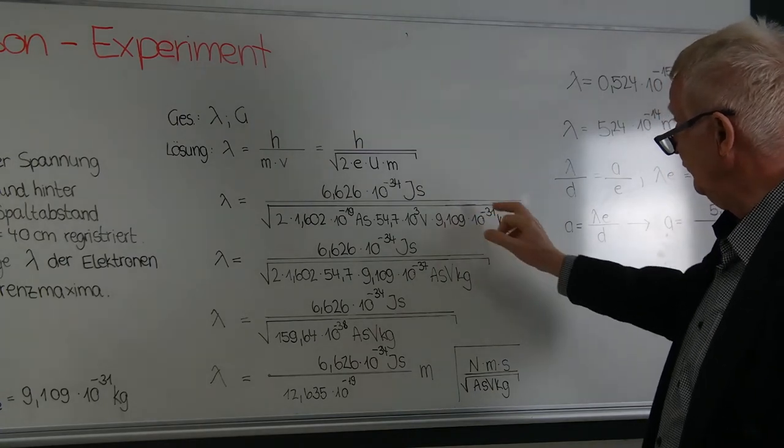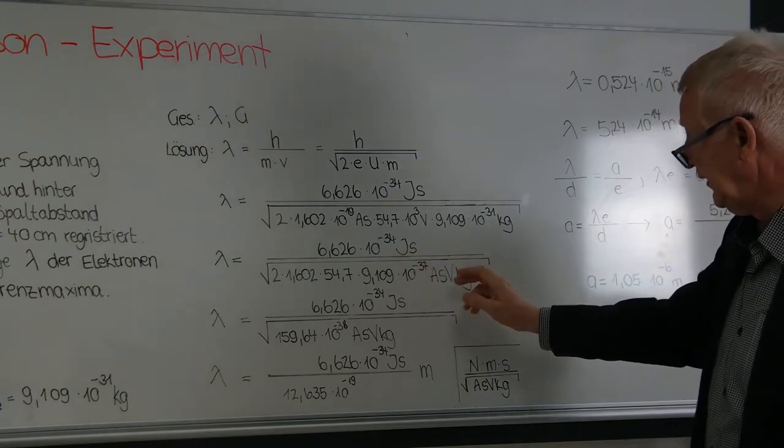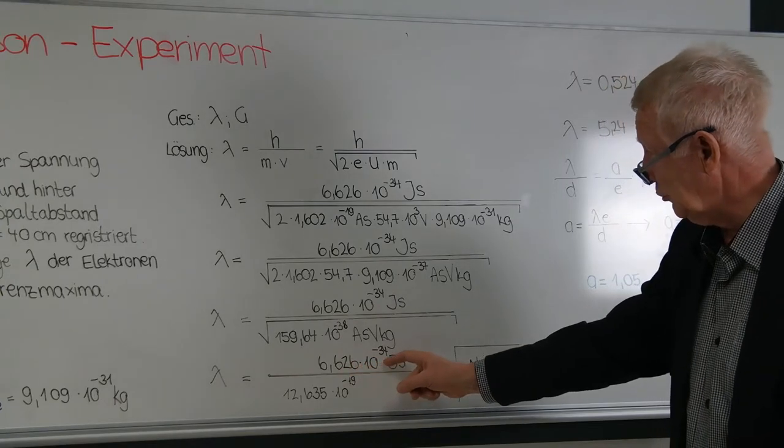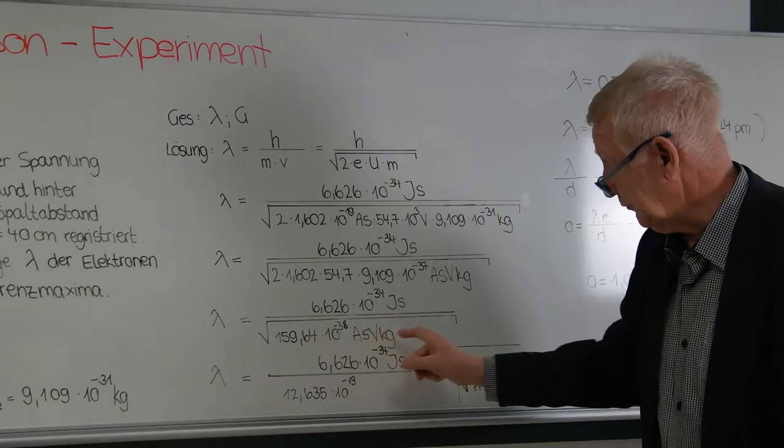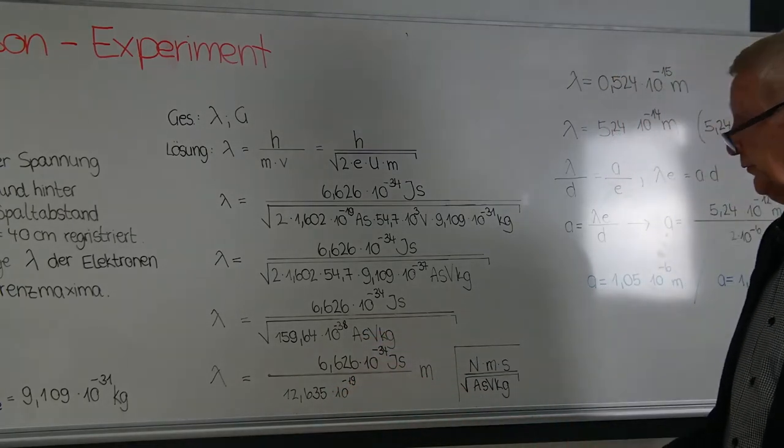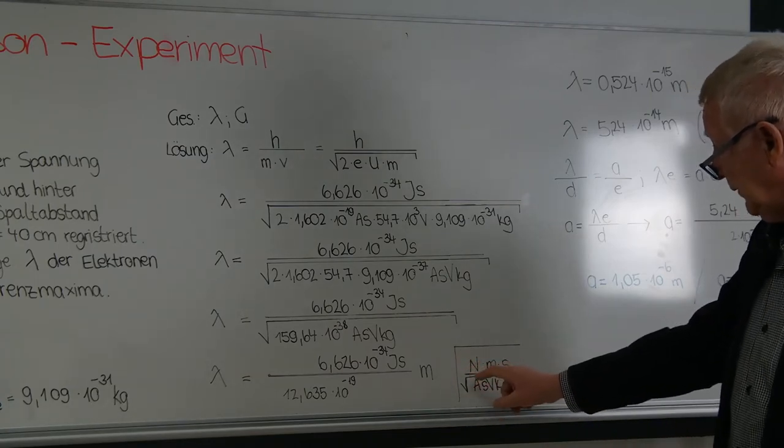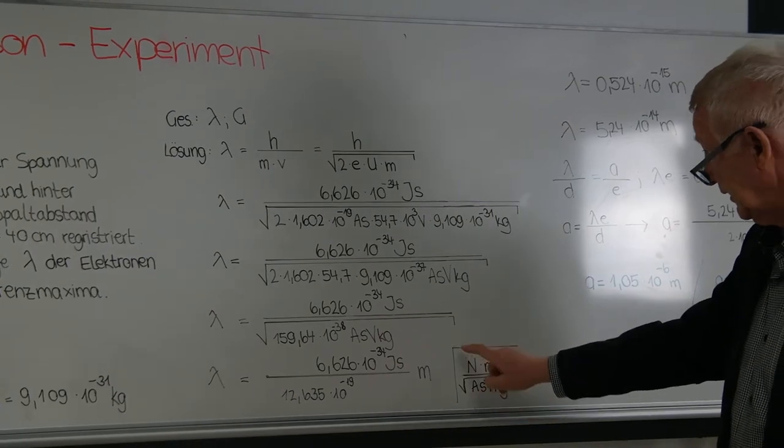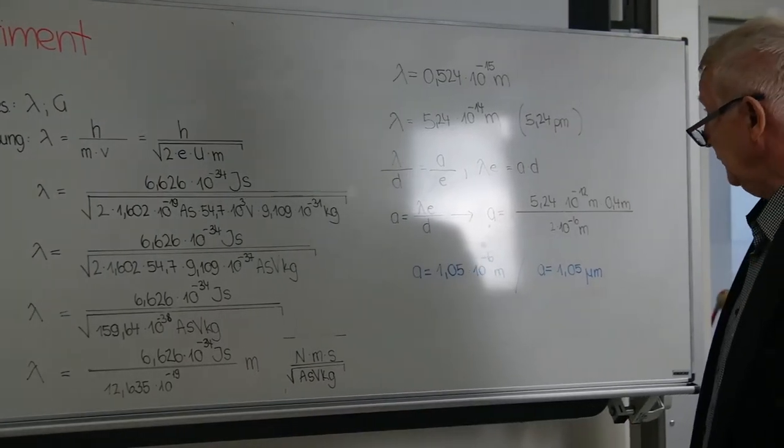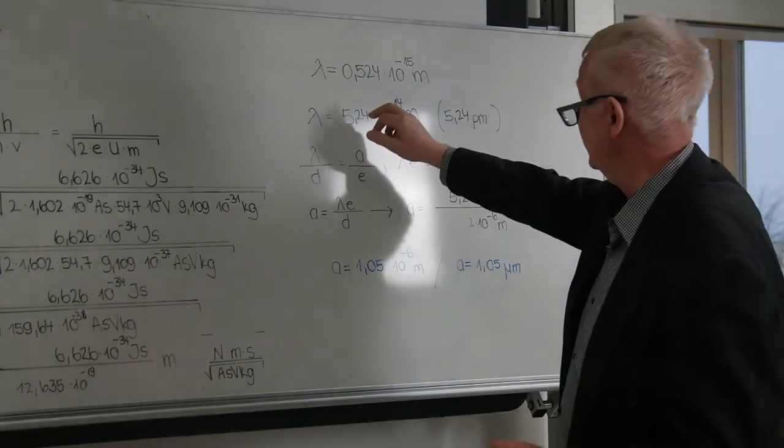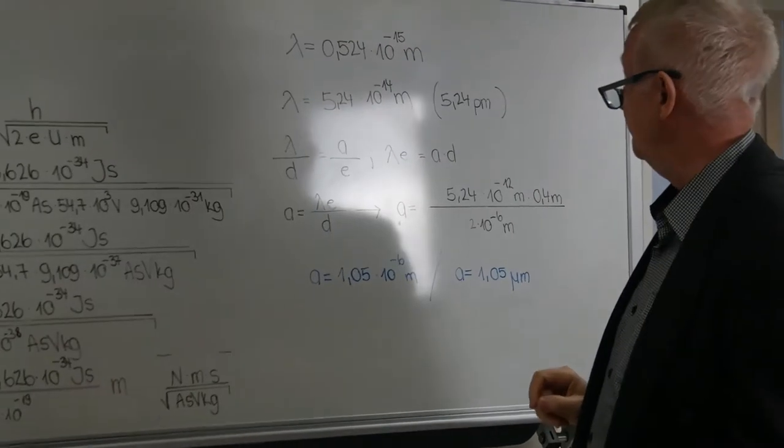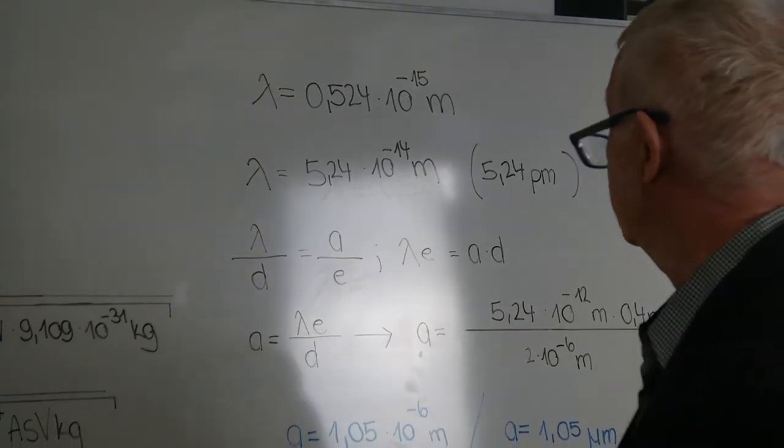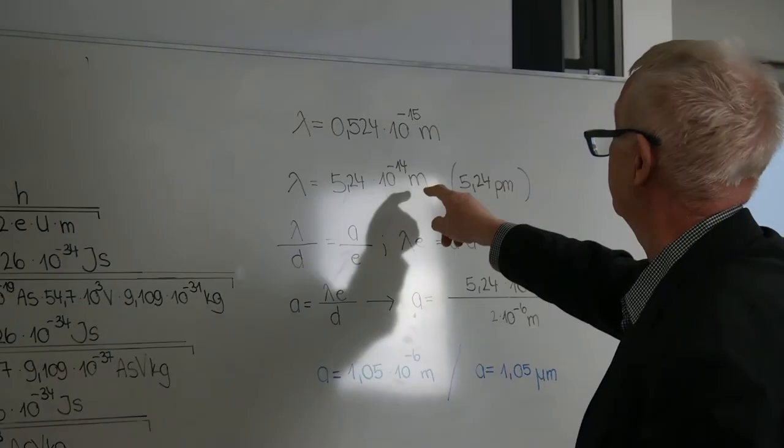I don't want to read everything now. The units are of course interesting. I've combined the powers. Now let's go very slowly down to the last line. Then we still have 6.626 × 10⁻³⁴ joule seconds divided by the calculated square root of 12.635 × 10⁻¹⁹, and meters appears. The girls have given the units again here. We obtain a wavelength value of 0.524 × 10⁻¹⁵ meters, or 5.24 × 10⁻¹⁴ meters, or 10⁻¹⁴ meters.